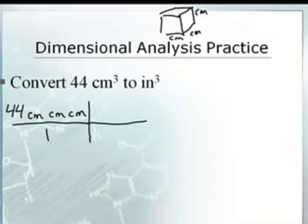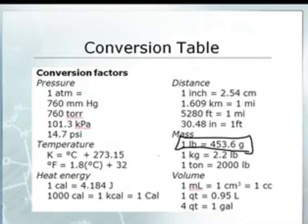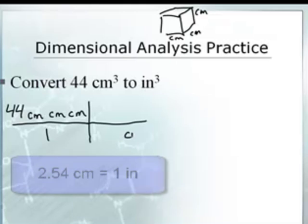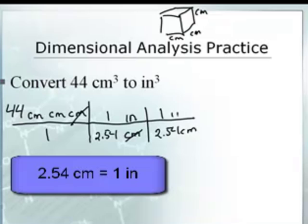So now I just need to convert centimeters to inches three times. If we look at our conversion table, centimeters to inches — here it is: 2.54 centimeters is one inch. So I'm going to put centimeters to inch, and we know there's 2.54 centimeters in one inch. It crosses off the centimeter. Am I done? No, I've got two more centimeters. I have to cancel out all three centimeters — I have to do this three times. So 2.54 centimeters is one inch. We're converting centimeters cubed to inches cubed, which is saying centimeter, centimeter, centimeter to inch, inch, inch.